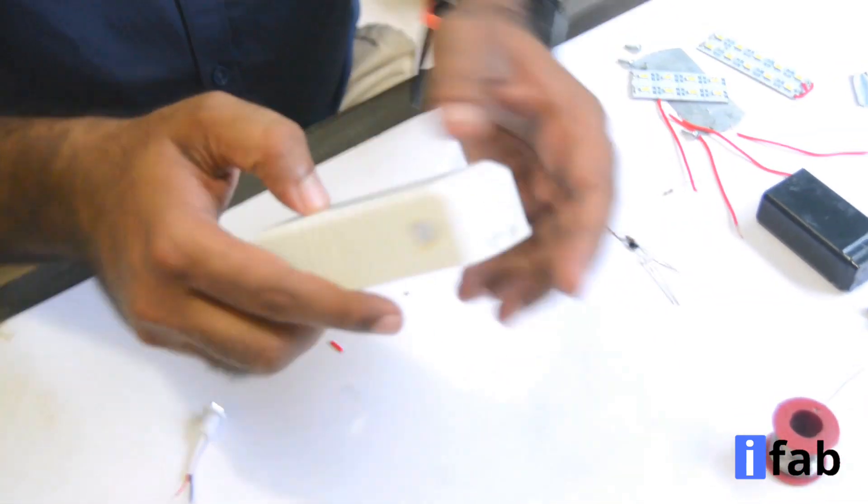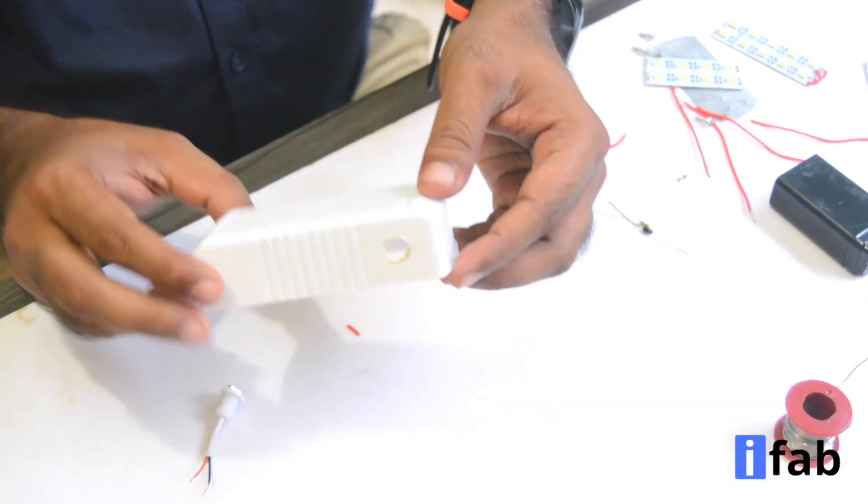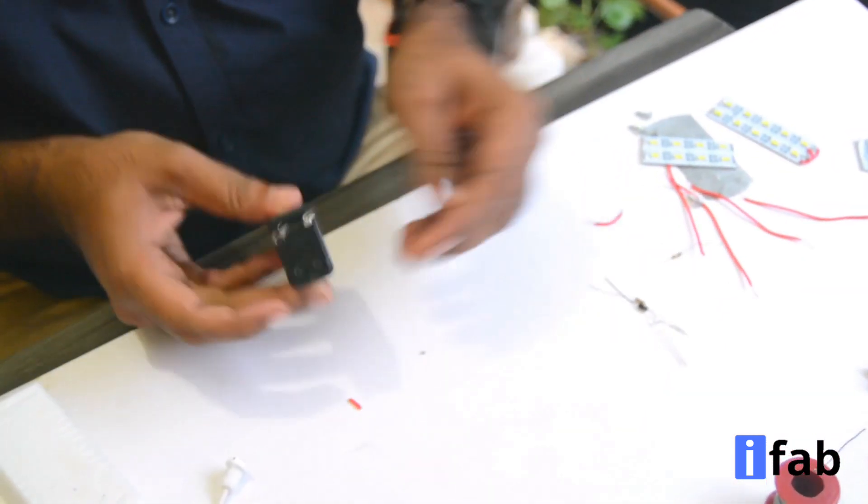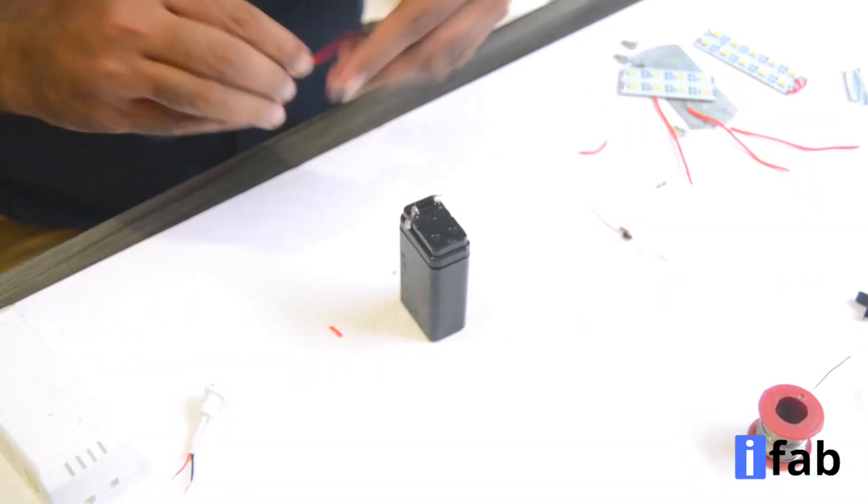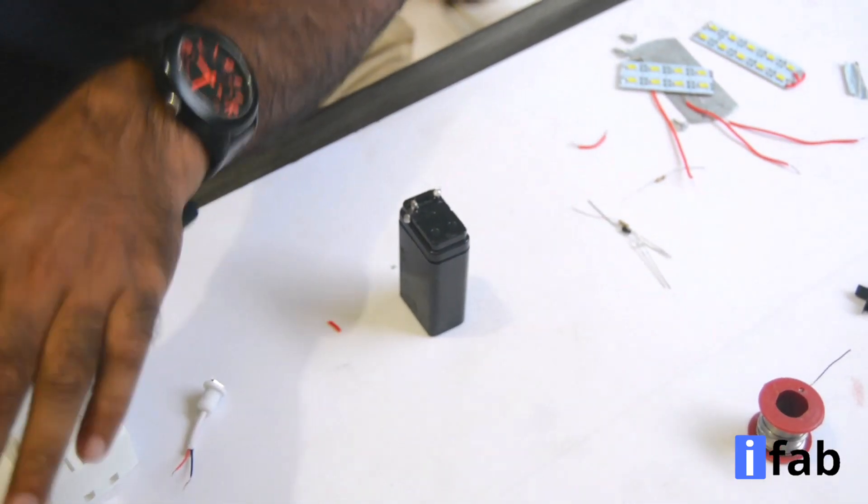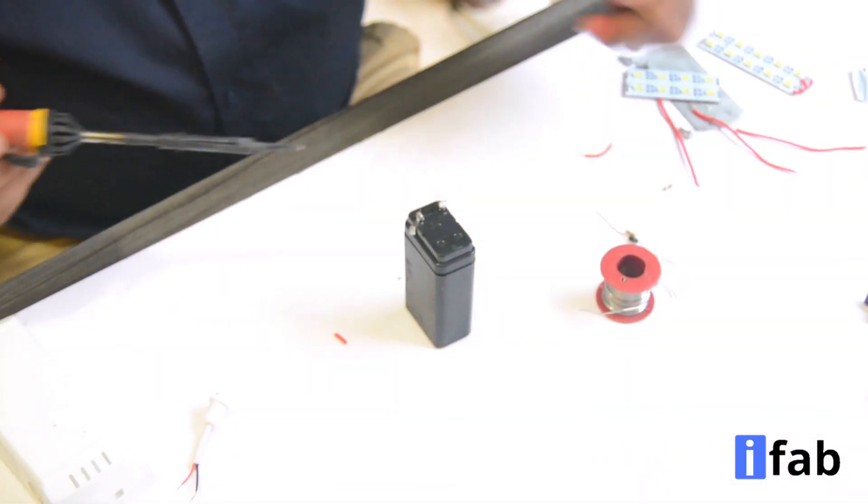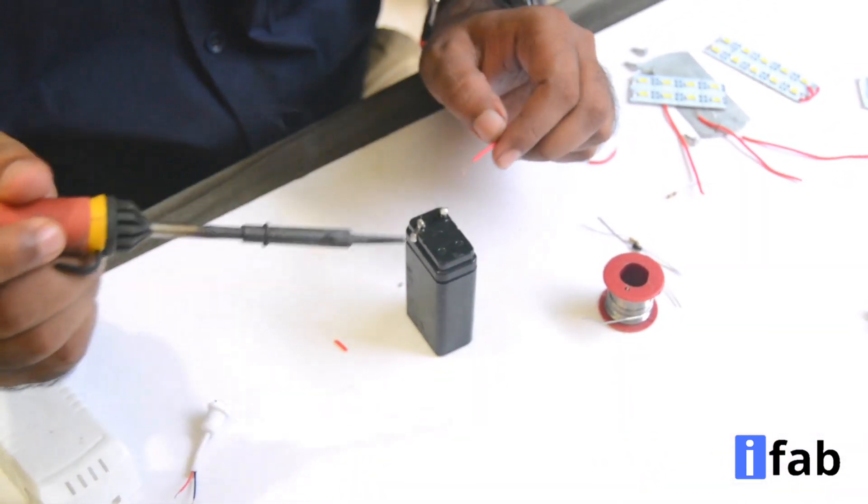You can use a knife or blade to remove the unwanted portions. First take the 4 volt 1 ampere hour battery. Now connect the positive terminal of the battery directly to the center pin of the double throw switch.